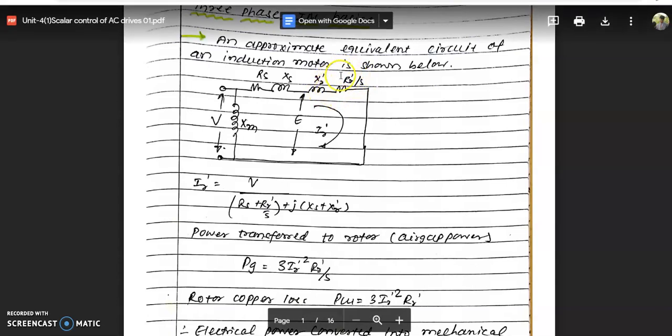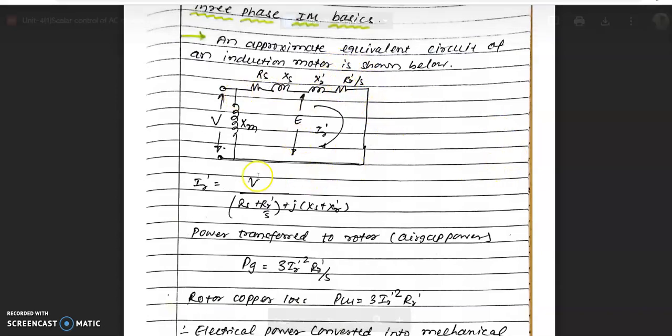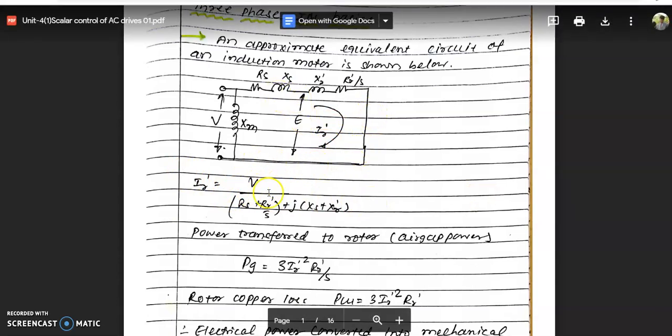You can see it is R'r divided by s, which is a variable part. In short, when you give a supply voltage Vs, the current in the rotor circuit is given by this equation - a simple RL series circuit.